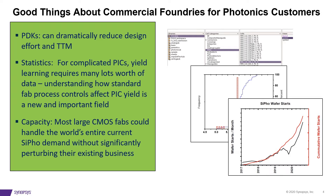Another good thing about a big foundry is statistics. For complicated PICs, yield learning requires lots and lots of data. Even though you can simulate and get the nominal performance pretty accurate, to see how your PIC is going to perform over time, across process, across temperature, you need statistics — and that's what a foundry can give you. The final thing is capacity. Versus a boutique foundry, a commercial foundry can make lots of wafers and is ready to scale with you. Most large CMOS fabs could probably handle the entire world's current silicon photonics demand, so capacity is certainly an advantage.